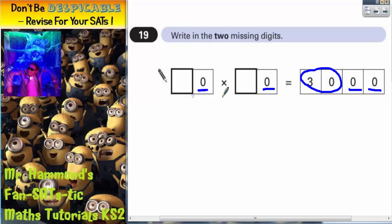Now all we need to do is make our two tens digits in the question multiply together to make 30. So how do we make 30? We can either have 5 times 6 or 6 times 5.